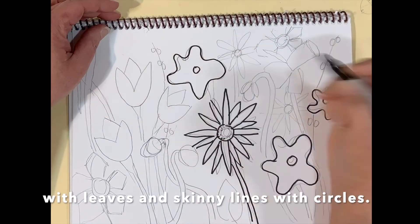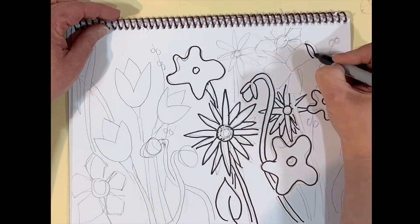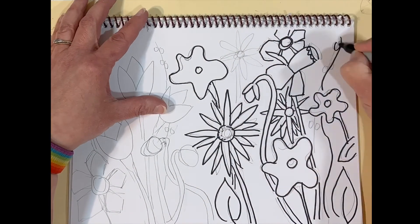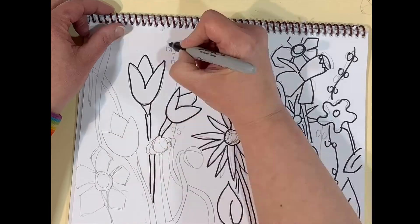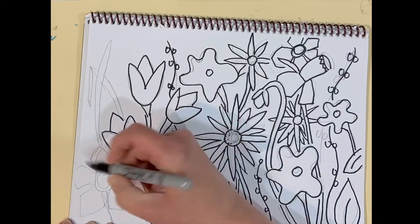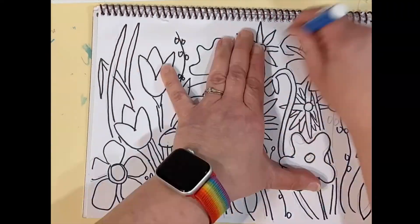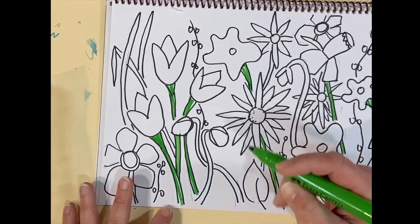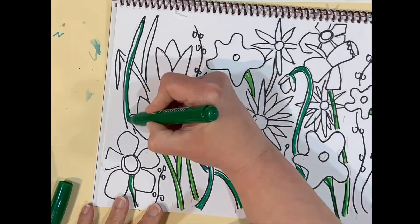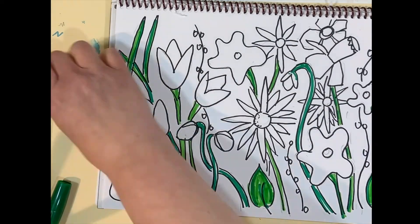After I went over everything in pencil I went over all of these flower shapes in sharpie. I really tried to fill up my page. Once I went over in sharpie I started going over everything in marker.